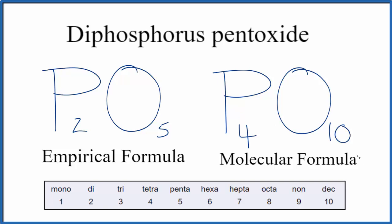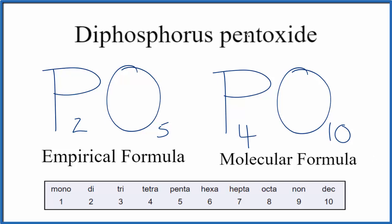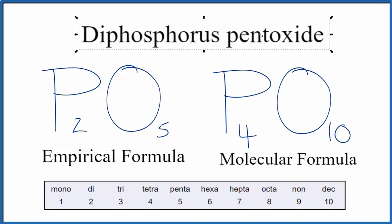But because the name was used so widely, it's really stuck around. And when we say diphosphorus pentoxide, we mean the molecular formula of P4O10, and we're just referring to the empirical formula with the name diphosphorus pentoxide.